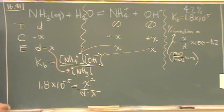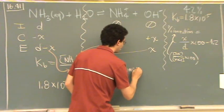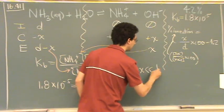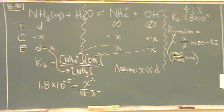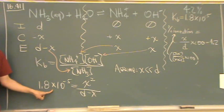You can use a quadratic here. But I'm just going to assume, like we usually do, that x is a lot smaller than d. We usually do that whenever it's a weak acid or a weak base.